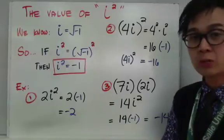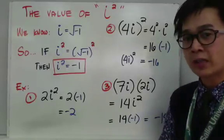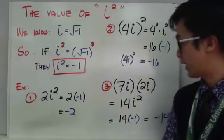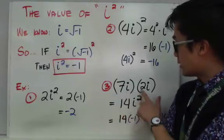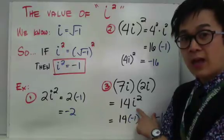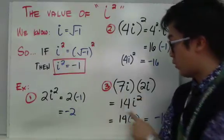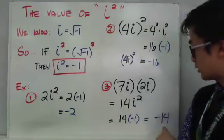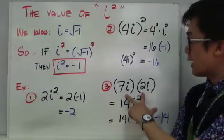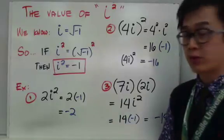For example 3, we are multiplying two imaginary numbers. When you multiply two imaginary numbers, the product becomes a real number. So 7i times 2i: 7 times 2 is 14, and i times i is i squared, which equals negative 1. So 14 times negative 1 is negative 14. Multiplying two imaginary numbers gives you a real number.